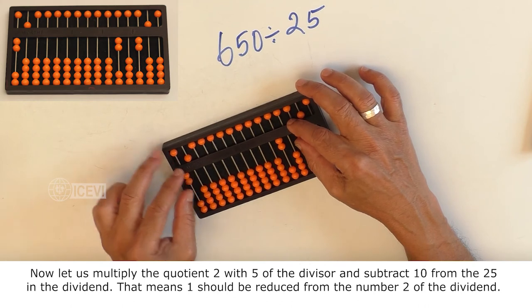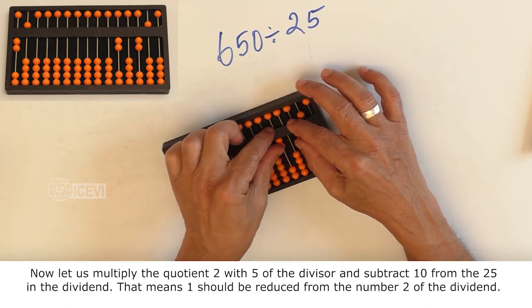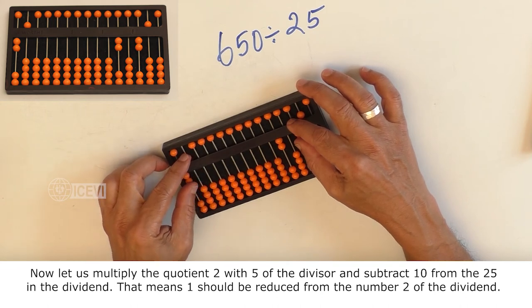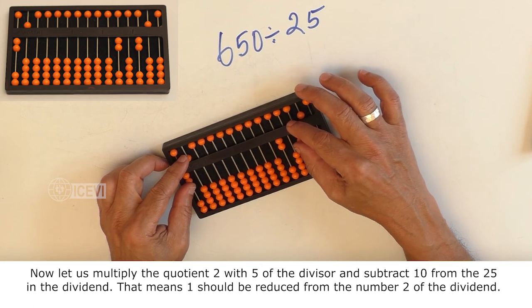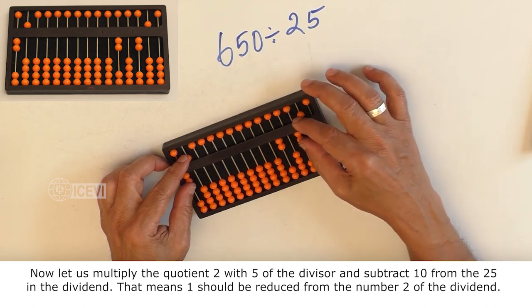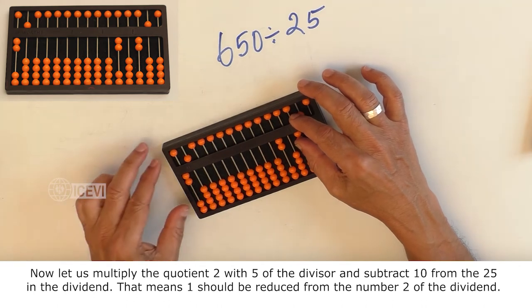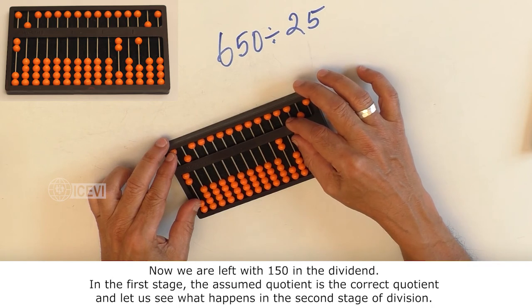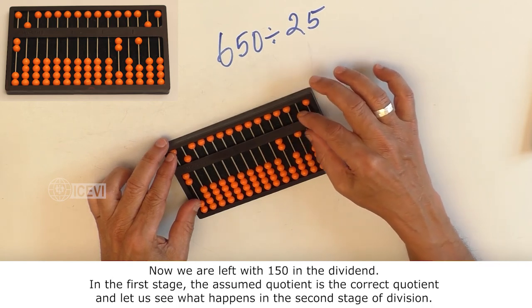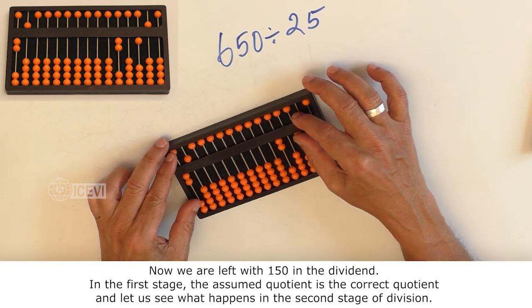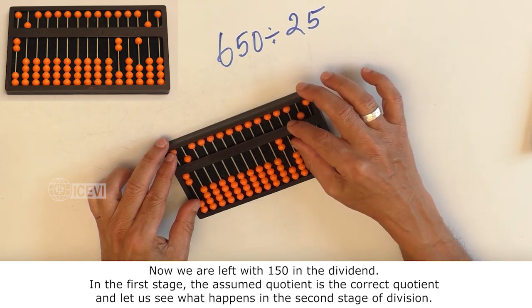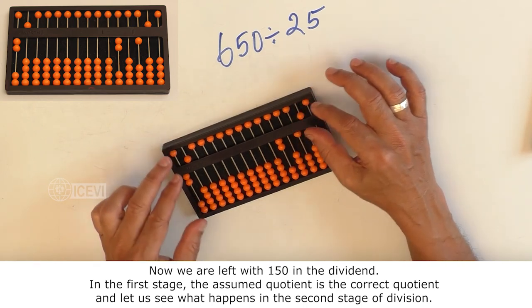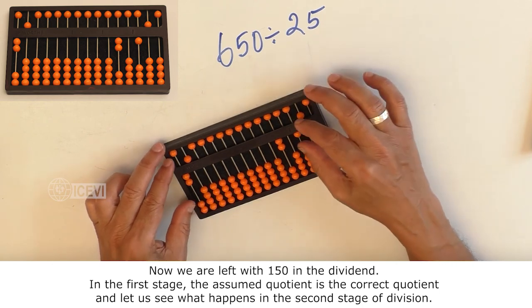Now, let us multiply the quotient 2 with the 5 of the divisor and subtract 10 from 25 in the dividend. That means 1 should be reduced from the number 2 of the dividend. Now we are left with 150 in the dividend. In the first stage, the assumed quotient is the correct quotient. And let us see what happens in the next stage of the division.